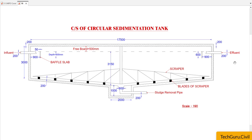This arrangement will be provided with two pipes: one for influent and another for effluent, of 200 mm diameter. In front of the influent as well as effluent, there will be a baffle slab of dimension 50 mm by 600 mm, which will be placed at a distance of 900 mm from the inside face of the sedimentation tank.